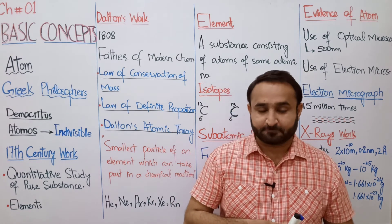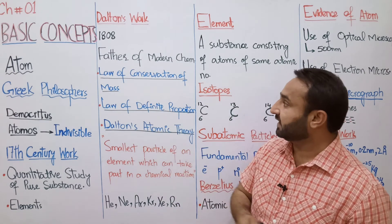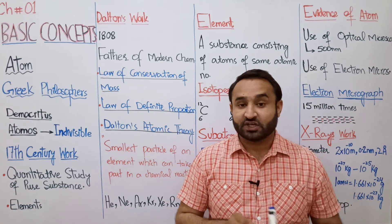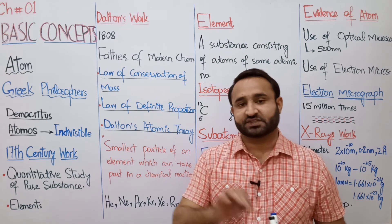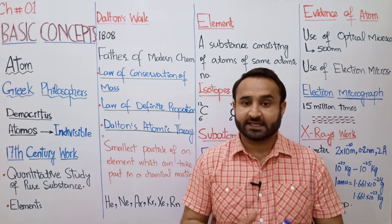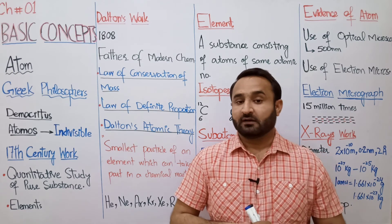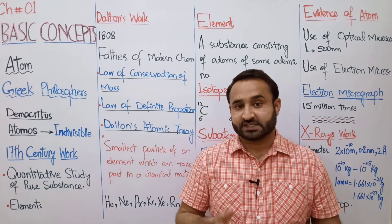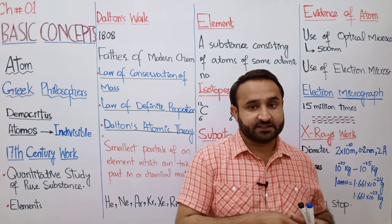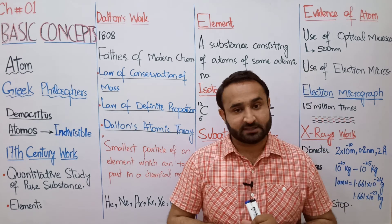Law of conservation of mass کے مطابق: mass can neither be created nor be destroyed, but can be changed from one state to another. مادے کو نہ تو بنایا جا سکتا ہے نہ ہی تباہ کیا جا سکتا ہے، بلکہ ایک physical state سے دوسری state میں convert کیا جا سکتا ہے۔ مثال کے طور پر، water کو heat کریں تو وہ vapors (gas) میں، اور freeze کریں تو ice (solid) میں بدل جاتا ہے۔